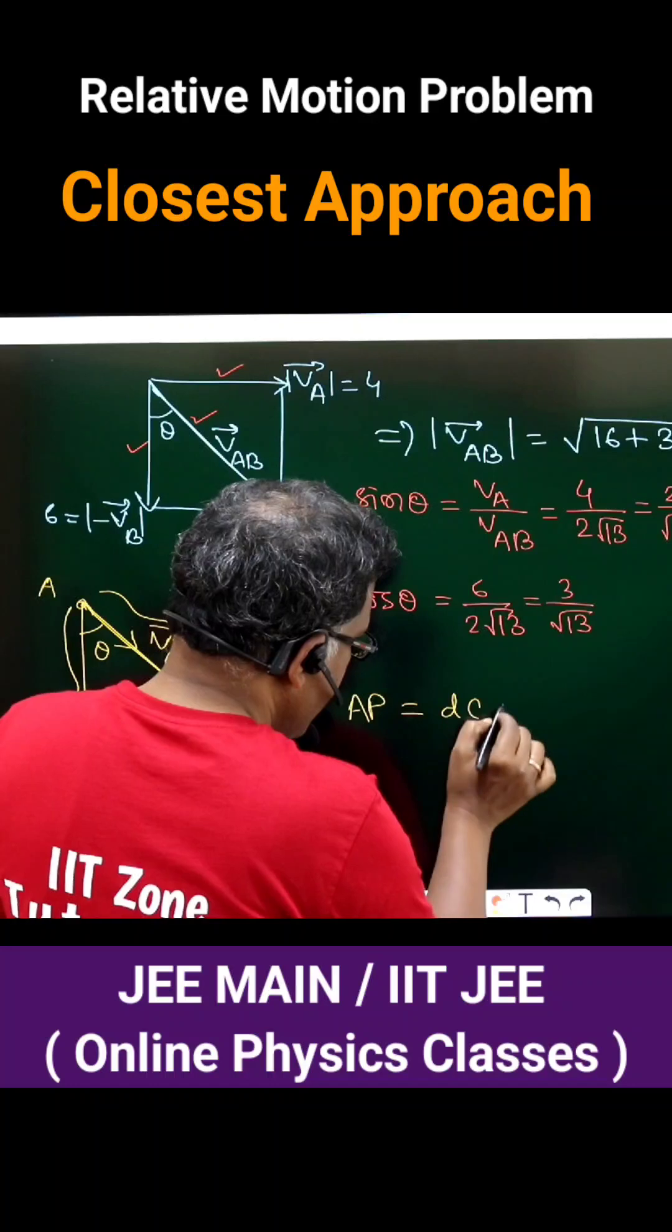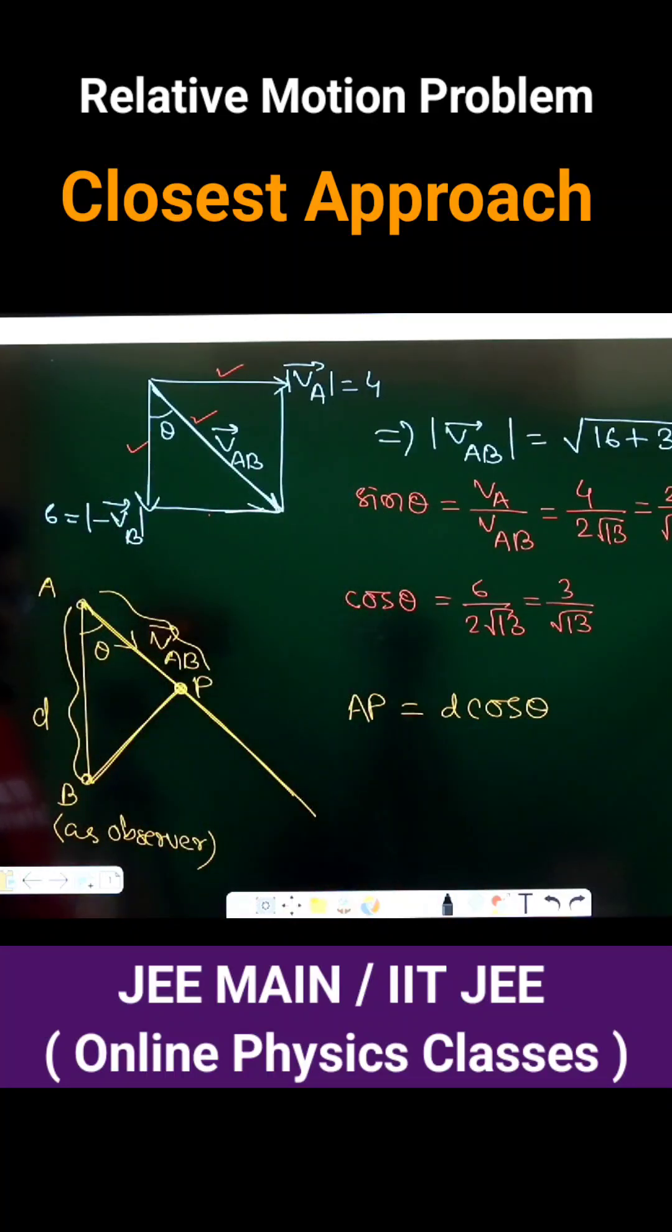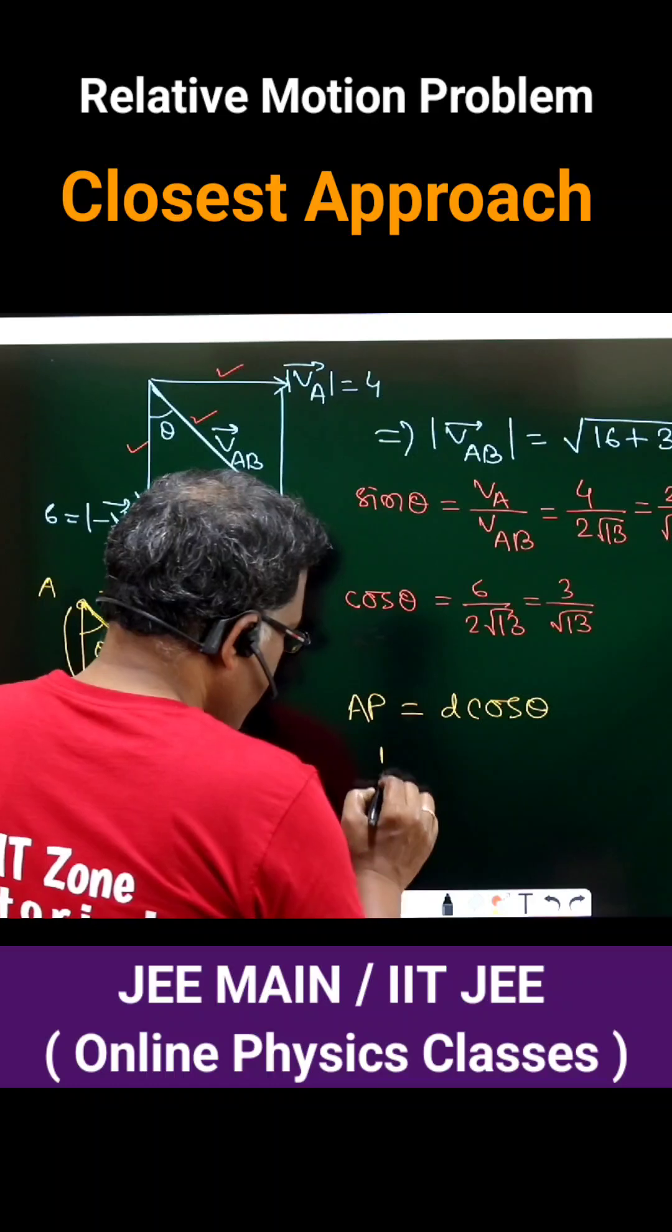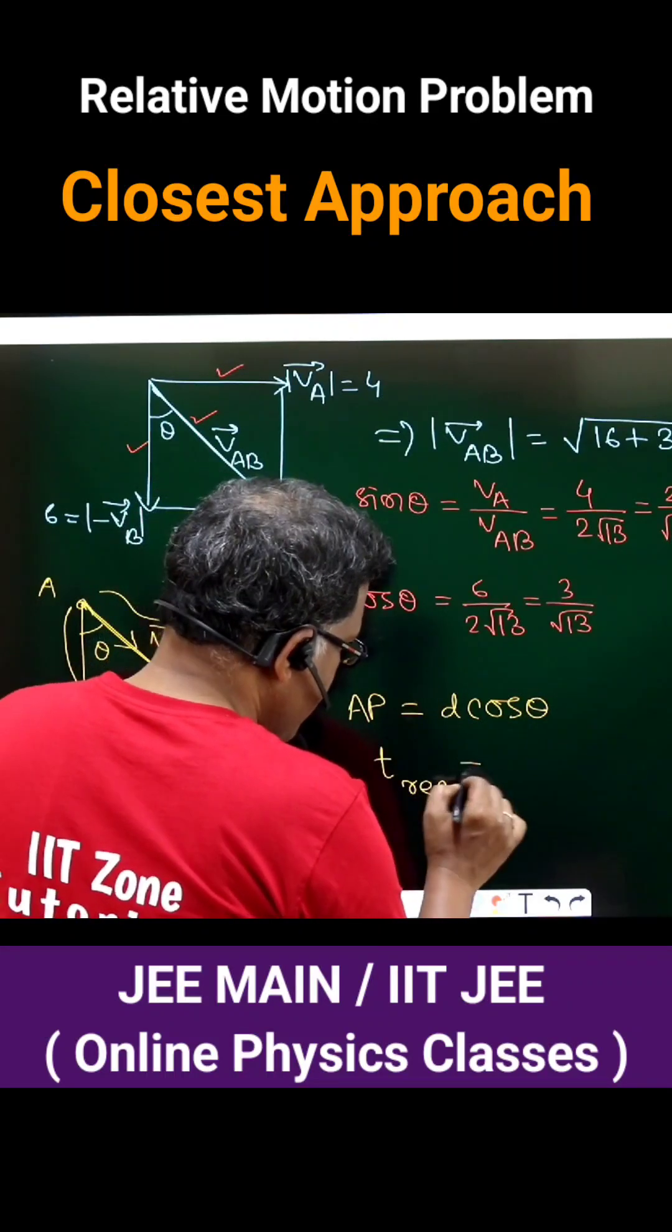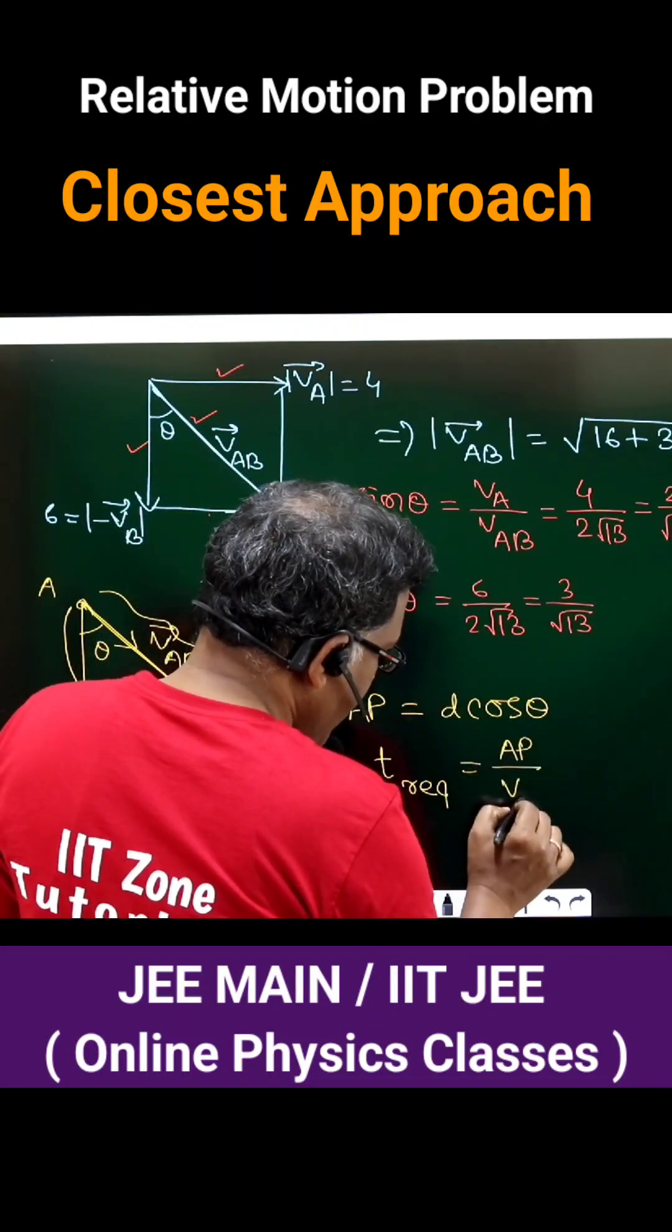Being this is d, so AP can be written as d cos theta. When A will travel through AP, that means the length of d cos theta using the speed of VAB, that will be the time they will be closest. So time required to appear closest will be AP by velocity appearing along that path.